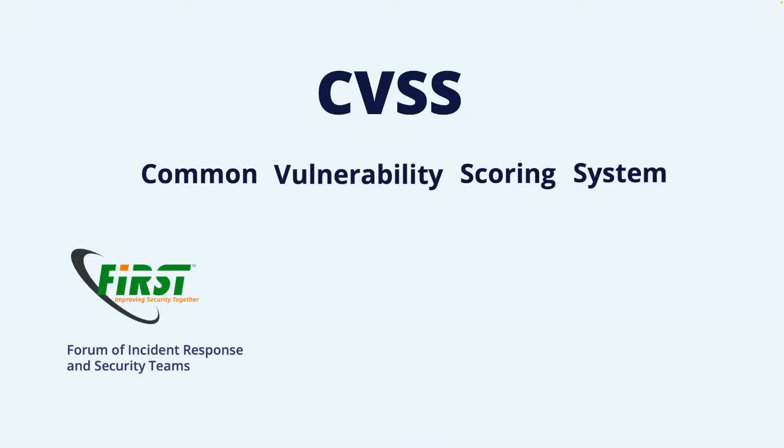CVSS does not only give the severity, but the way the score is constructed also gives information on under which circumstances it can be exploited and what impact a successful exploit can have. Though this information is not detailed, it does allow us to distinguish vulnerabilities across a range of such properties. The different metrics used to compute the CVSS score are also constructed such that it should be repeatable — meaning that if different people assess the same vulnerability, they should end up with the same severity score.